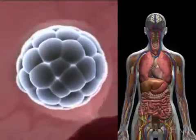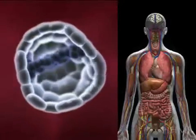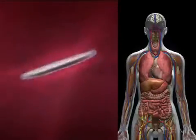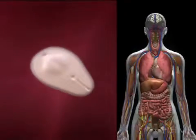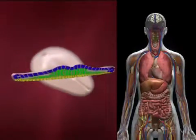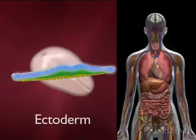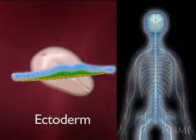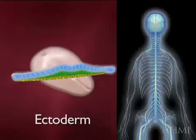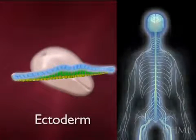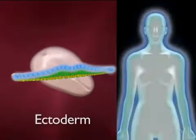If we now look at the embryo after the three germ layers have formed, this video will highlight what comes from the blue germ layer, the ectoderm. You'll see that it makes the nervous system, including the brain, and the skin.